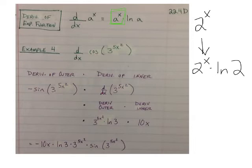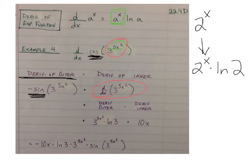In example 4, what I've got is a chain rule within a chain rule. So our outer function is cosine. Our inner function is 3 raised to this power. And our inner inner function is 5x squared. So what we can do is we can take the derivative of the outer, which would be negative sine, times the derivative of the inner. So if we want to take the derivative of the inner, we're going to have to apply the chain rule again. So we start by taking the derivative of the outer, which we use the rule we just learned, a to the x times ln of a.